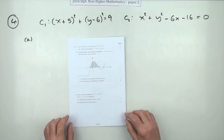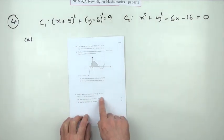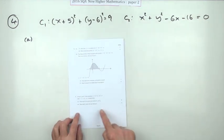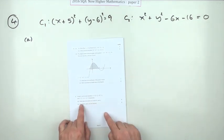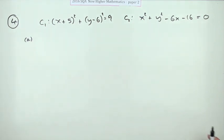So number four from paper two of the 2016 New Higher, there we go, the circles question. It looks quite nice and neat, there's no pictures or anything, seven marks. And the first four marks in fact is just for writing down the centers and radii of these two circles, which means of course they don't require any justification.